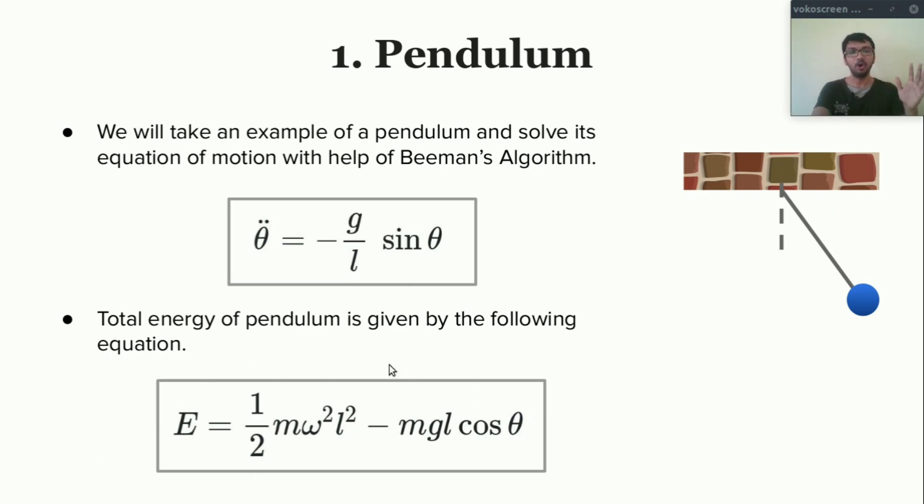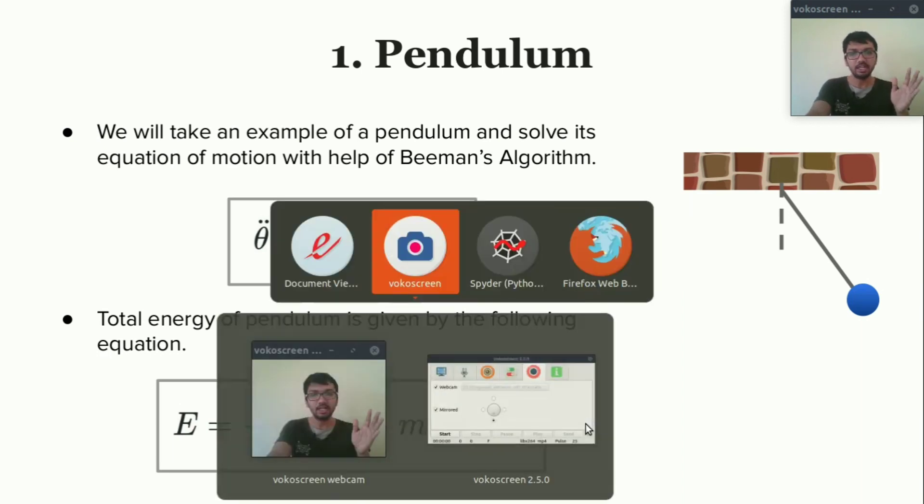This is the equation for total energy. The first term, one-half M omega squared L squared, represents the kinetic energy of pendulum, and minus MGL cos theta represents potential energy of a pendulum.